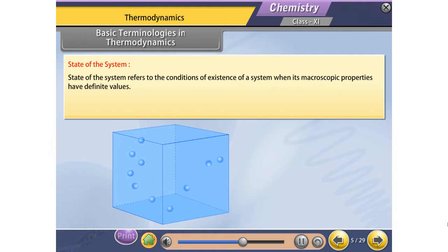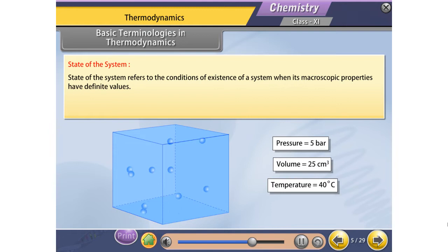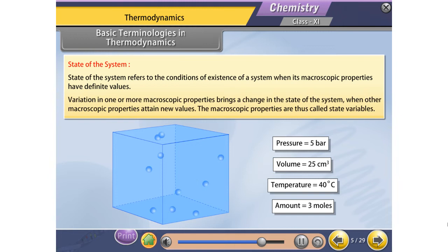The state of the system refers to the conditions of existence of a system when its macroscopic properties have definite values. For example, the state of a gaseous system can be defined by its pressure, volume, temperature, and amount. Once these minimum numbers of macroscopic properties are fixed, the other properties automatically acquire definite values. Variation in one or more macroscopic properties brings a change in the state of the system when other macroscopic properties attain new values.